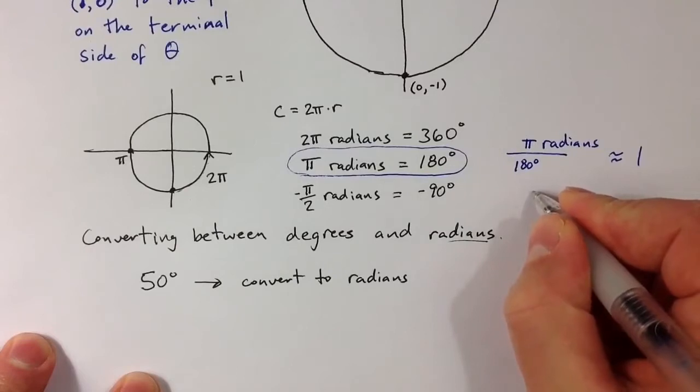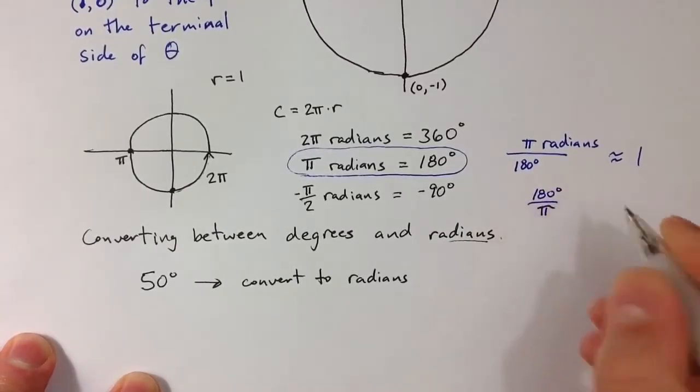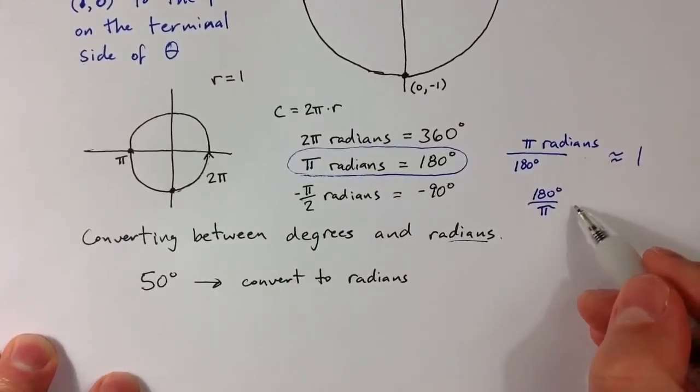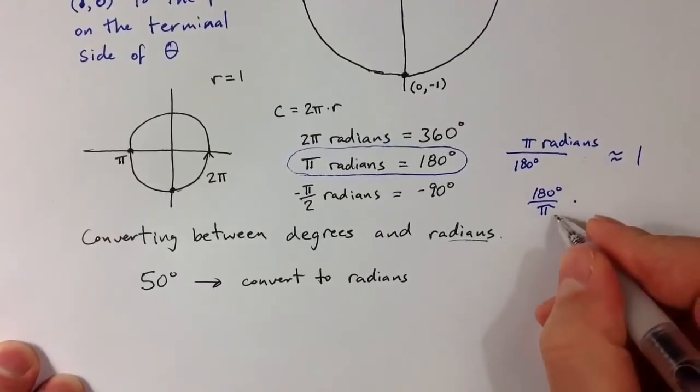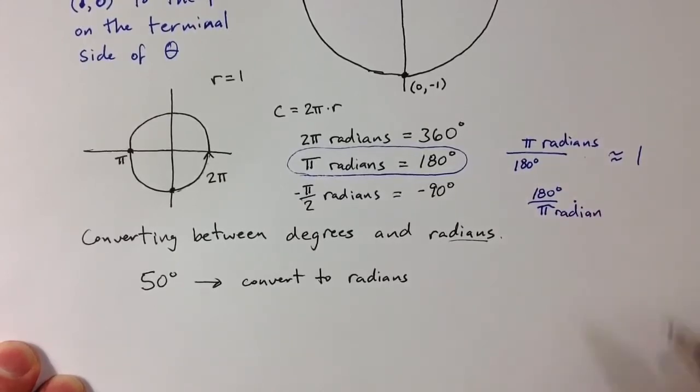We could also think about 180 degrees divided by π, and that would also equal one. So if we want to go from degrees to radians, the upper conversion factor is the one to use. If we want to convert from radians to degrees, we want to use the lower conversion factor.